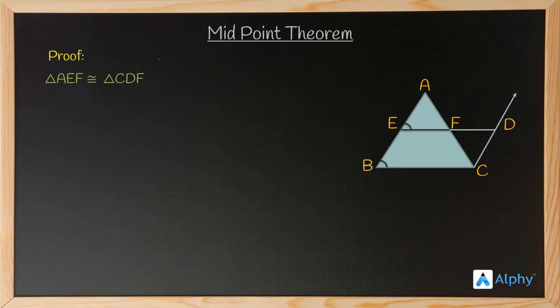This is what we got in the last slide, that triangle AEF is congruent to triangle CDF, and according to the corresponding side property we have concluded how EF is equal to DF and how BE is equal to CD.